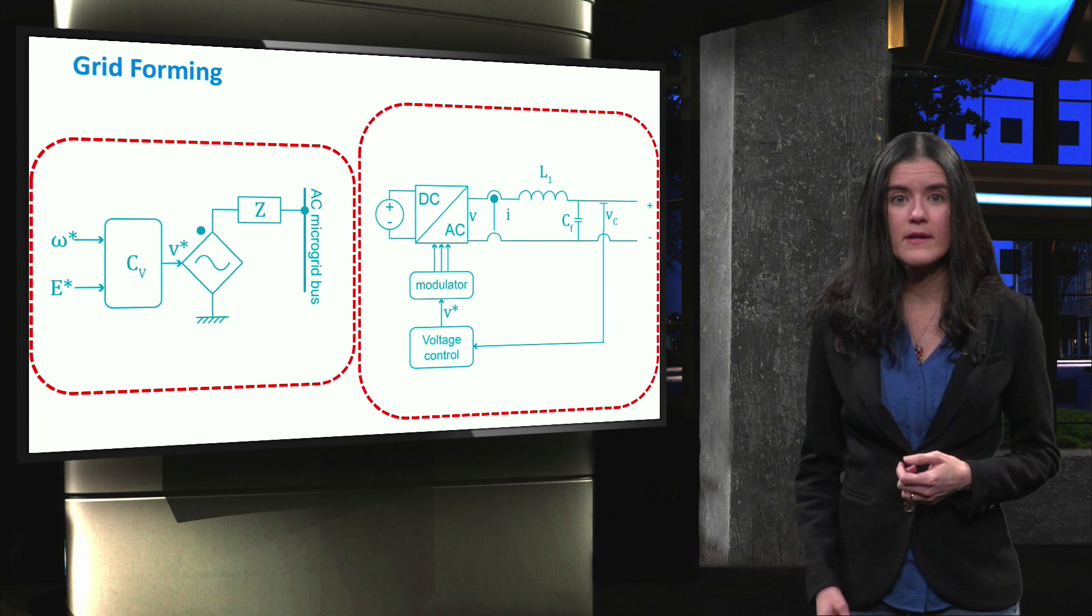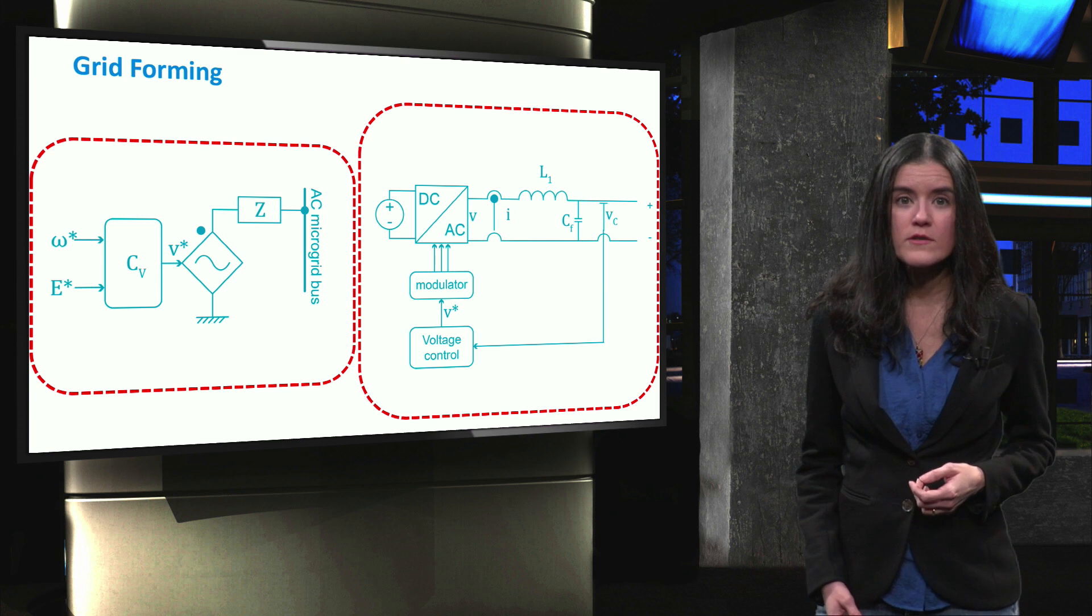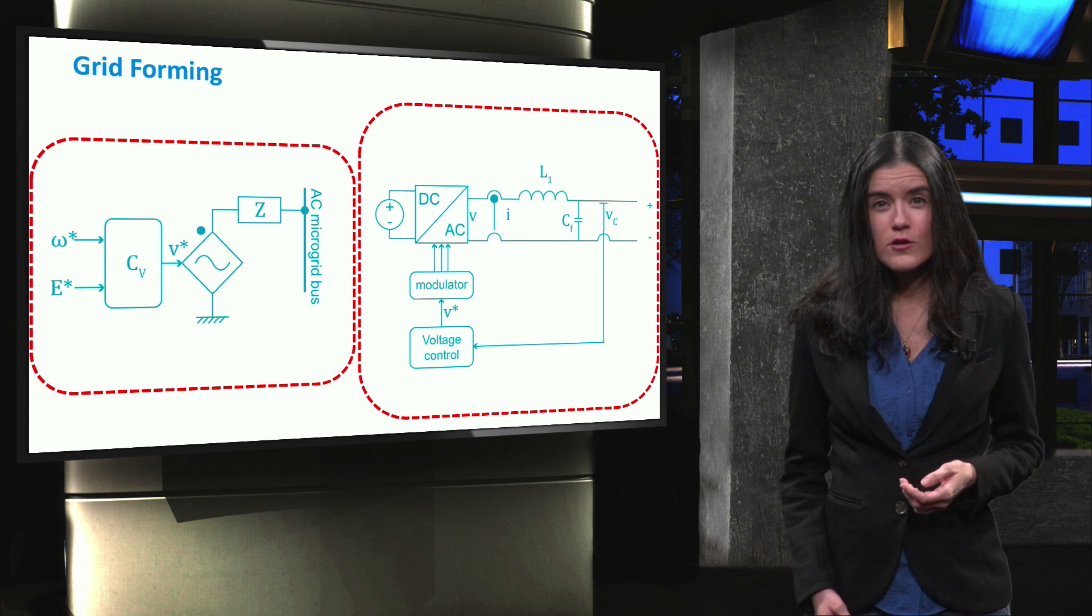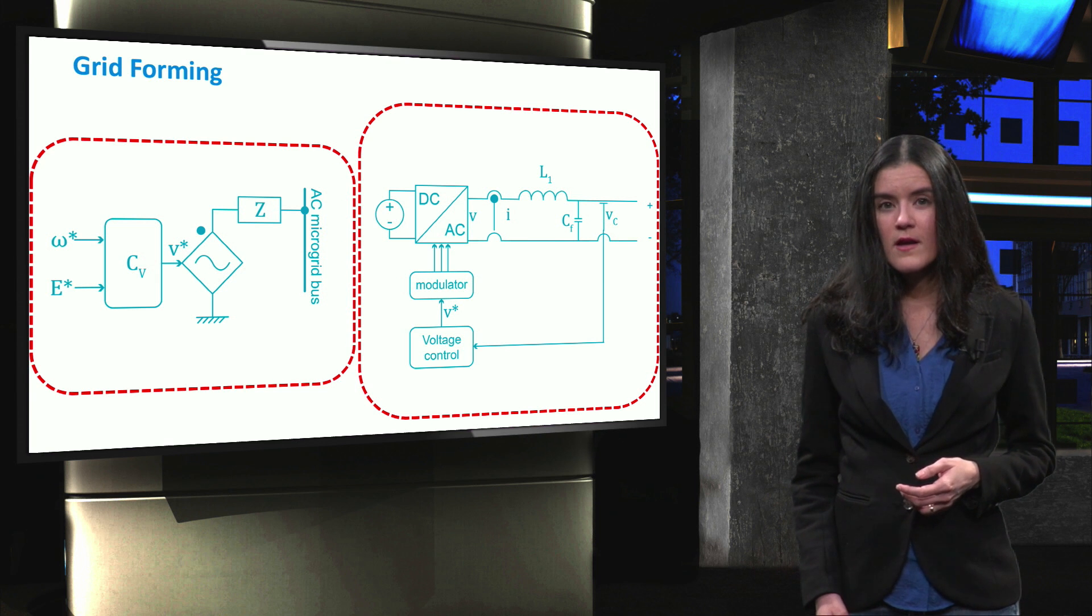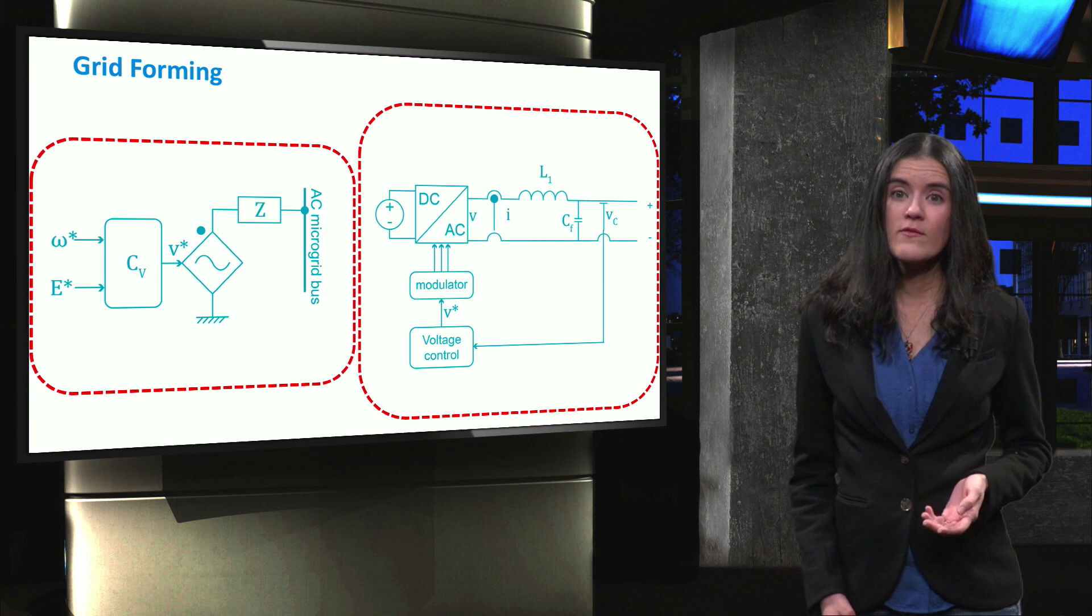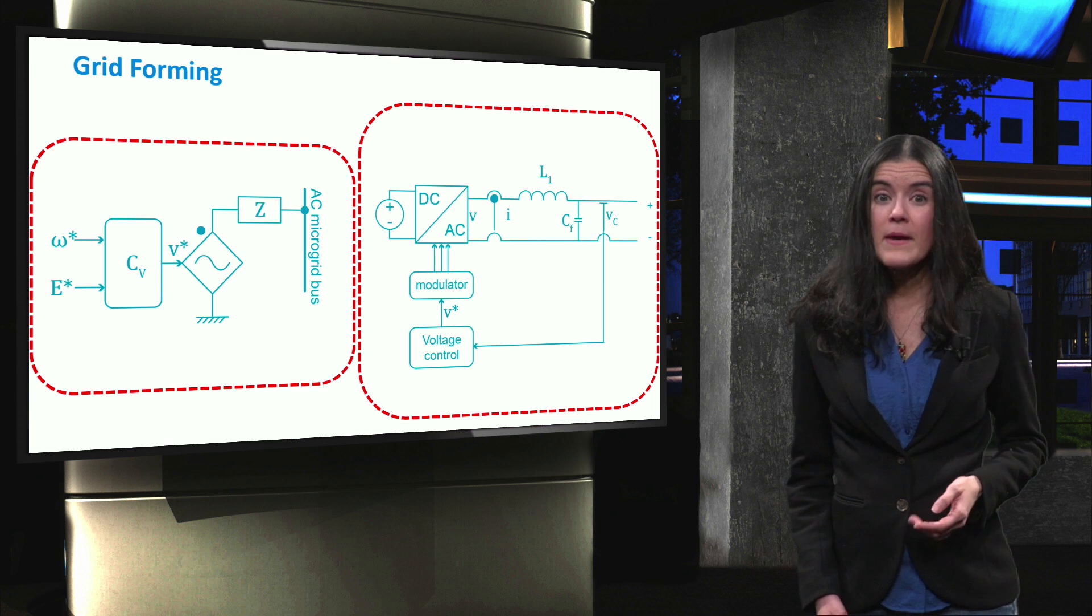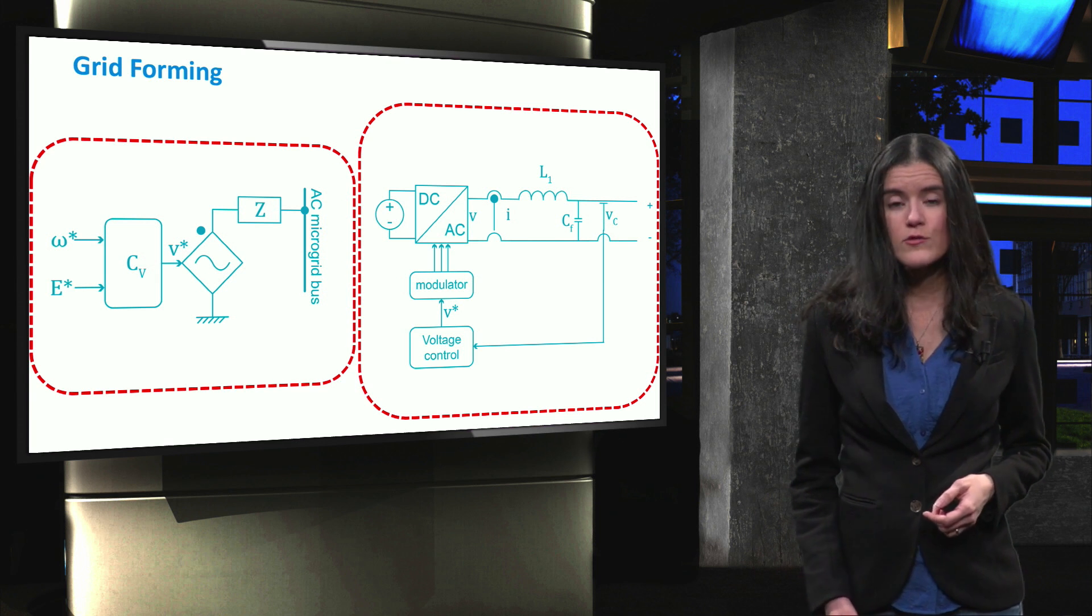In order to operate in parallel with other grid-forming converters, they require an external synchronization signal provided by the microgrid central controller. A practical example of this is the standby uninterruptible power source.